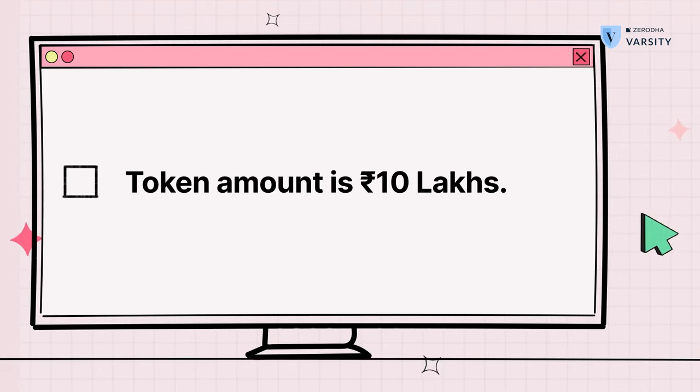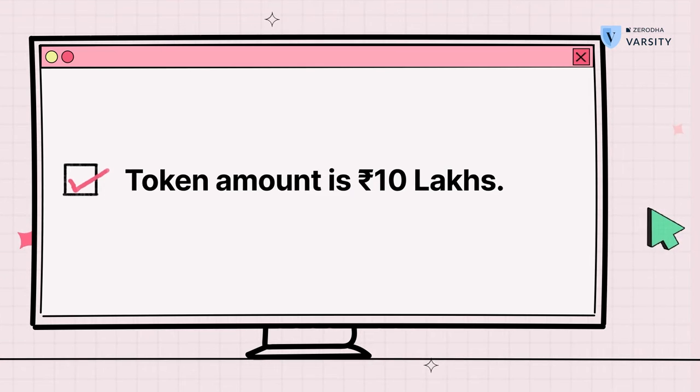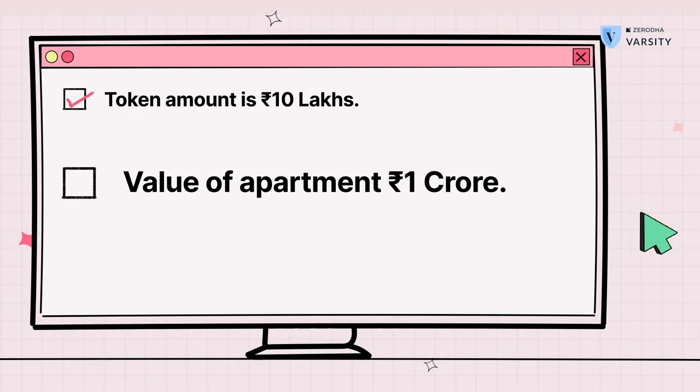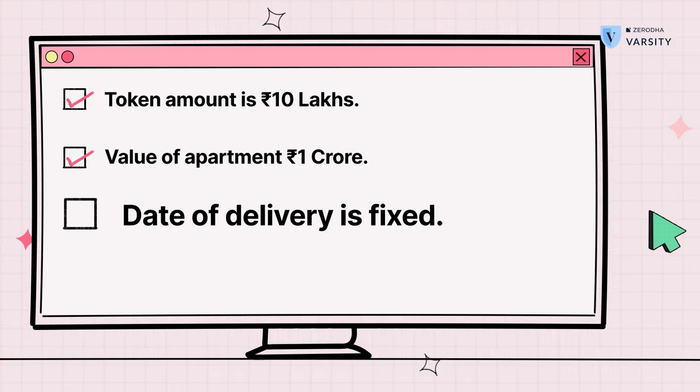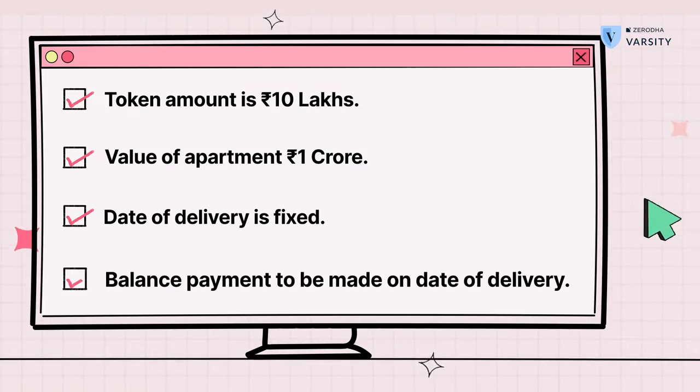You have paid 10 lakh rupees as margin to buy one apartment worth one crore rupees. You have also decided that the date of purchase is going to be sometime in the future where you have to pay the balance amount. Now let's imagine that you've invested in this house over the long term and you forget about it.